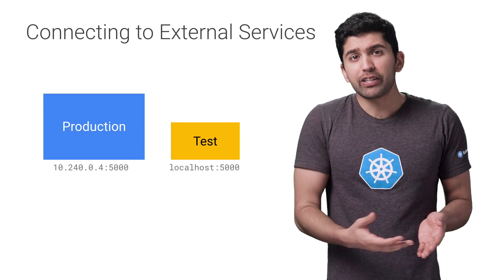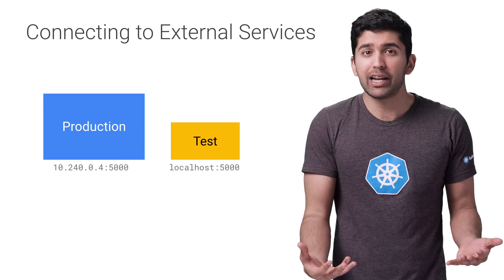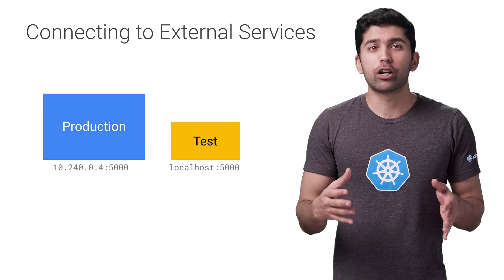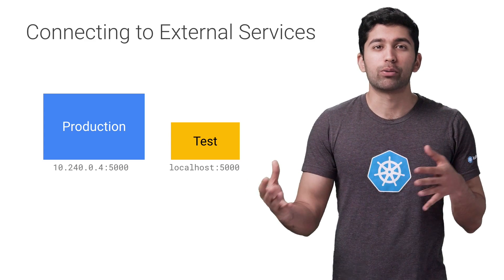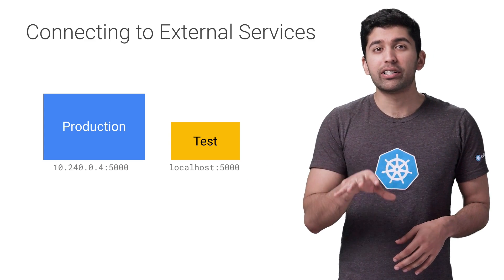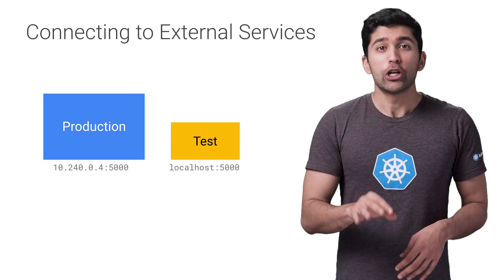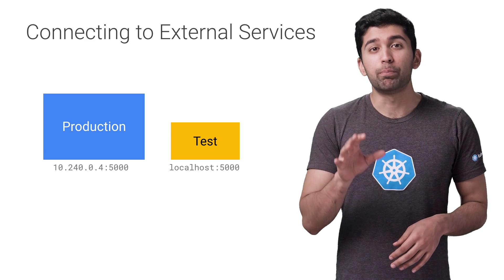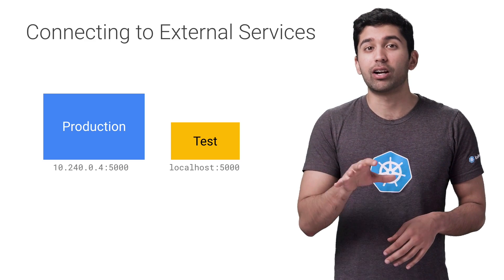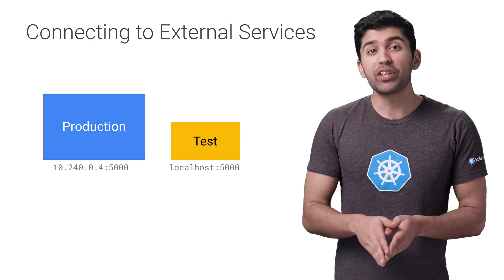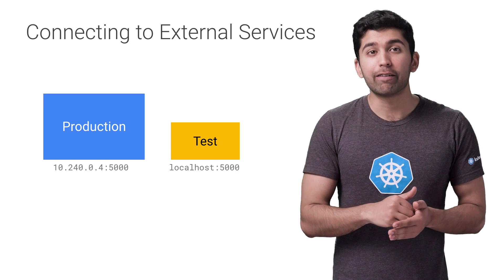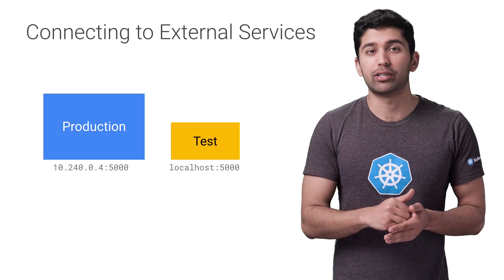But each of these will have a different IP address or domain name, and you don't want to change your code from environment to environment. So instead of hard coding these addresses, you can actually use the built-in Kubernetes DNS-based service discovery for these external services, just like you can for native Kubernetes services.